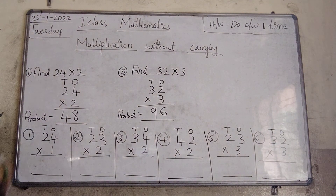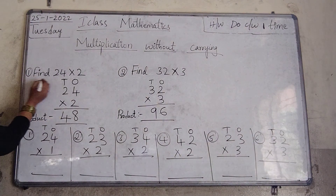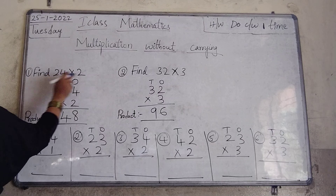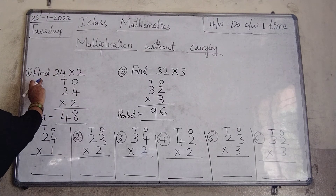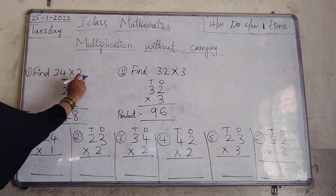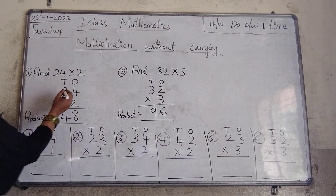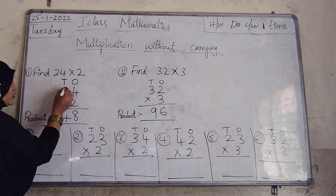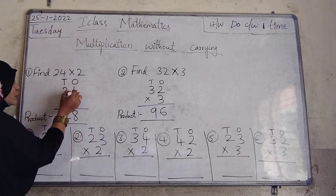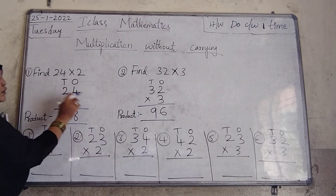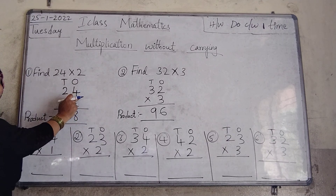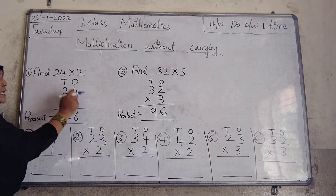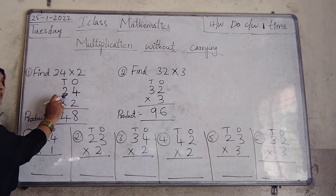See, first find 24 into 2. This is multiplication. Find 24 into 2 — we have to write this as 24 into 2. See here: 2 and 4, that is 24. This is 1's place — what is there in 1's place? 4. This is 10's place — what is there in 10's place? 2.